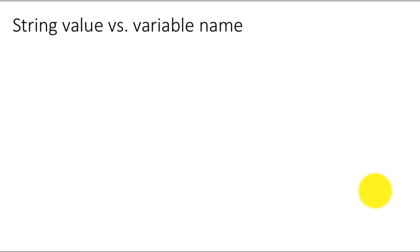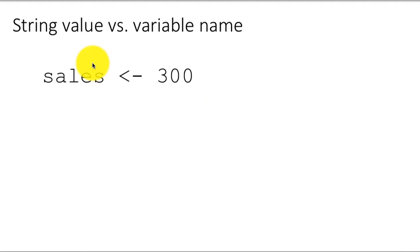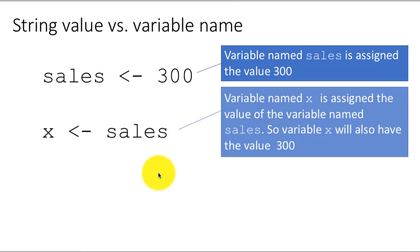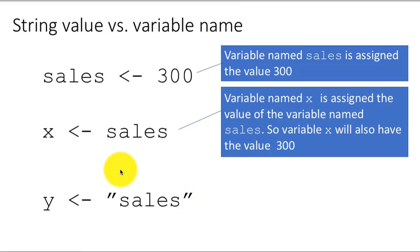Another distinction that you really must understand very clearly is string value versus a variable name. So when you say sales is assigned the value 300, sales here is the name of a variable — in other words, we can assign some other value to this variable later on. Then I can say x is assigned the value sales, meaning x will now become 300. But suppose I said y is assigned the value "sales" within quotes. This is very different from the variable sales. Because now that this has quotes around it, it's a literal, it's a constant, it's not a variable. This is a distinction you must make very carefully, and this will inform you as to when you need to put quotes around something and when you should not.